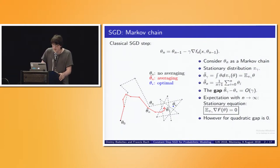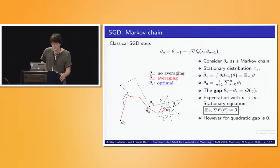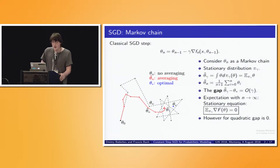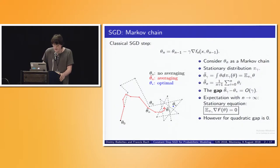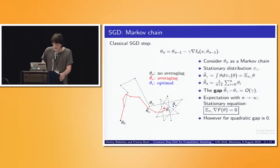Now let's look at the gradient step equation and take expectation both over parameter theta and over data x. If we take expectation over parameter theta, the first two terms cancel out because they converge to the stationary distribution, and by definition the expectation of f_n is f. So we get the so-called stationary equation. From this equation we can see, for example, that if the function is quadratic the gap is zero — that is one case where the gap is not of order gamma.